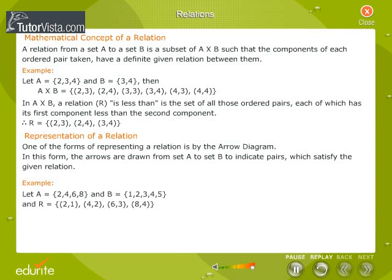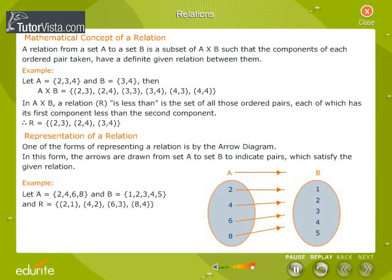This relation set R is represented diagrammatically as shown alongside. This is called the arrow diagram.